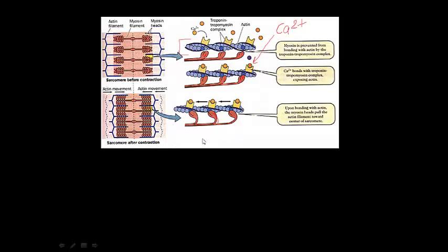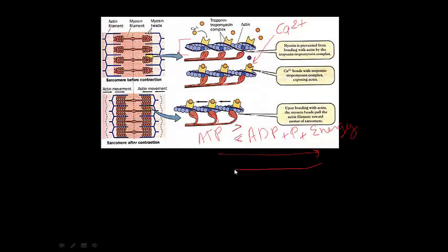What we need for that ratcheting to occur is called ATP. There's a formula I want you to know: ATP ↔ ADP + phosphate + energy. This is a double arrow, which means the equation can go either way. What we need for that myosin crossbridge to ratchet is energy. So your body is going to take ATP and break it down to ADP.